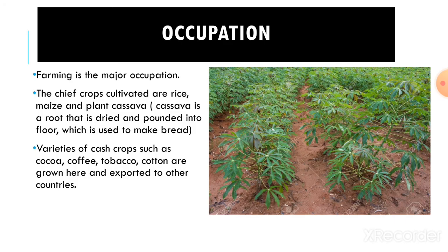Occupation: Farming is the major occupation. The chief crops cultivated are rice, maize, and cassava. Cassava is a root that is dried and pounded into flour, which is used to make bread. Varieties of cash crops such as cocoa, coffee, tobacco, and cotton are grown here and are exported to other countries.